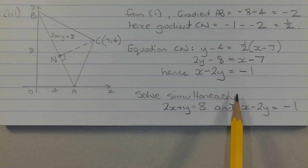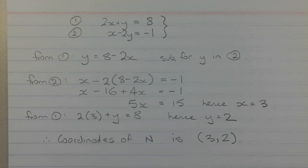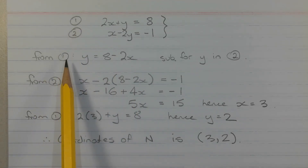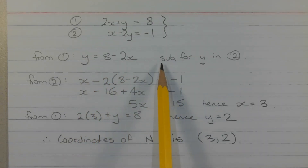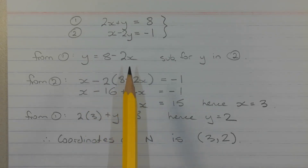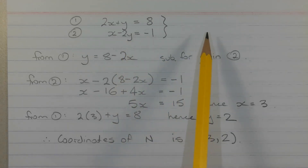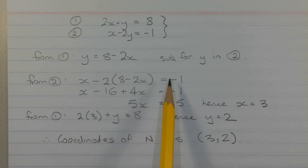We need to solve simultaneously the equations 2x plus y equals 8 — the equation of line AB — and x minus 2y equals negative 1. Using the substitution method: from equation 1, y equals 8 minus 2x. Substituting into equation 2: x minus 2 times (8 minus 2x) equals negative 1.